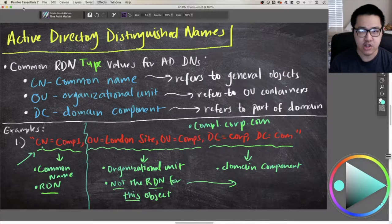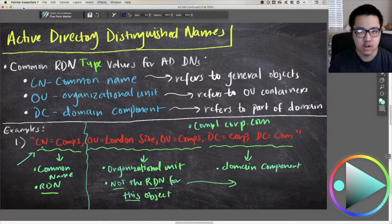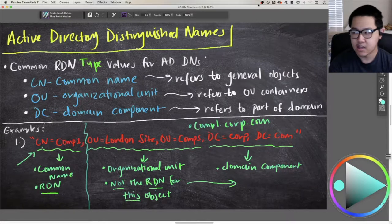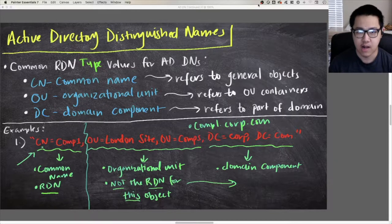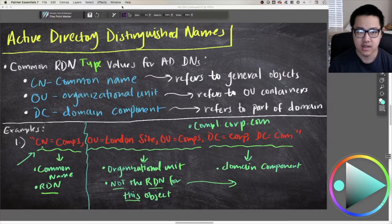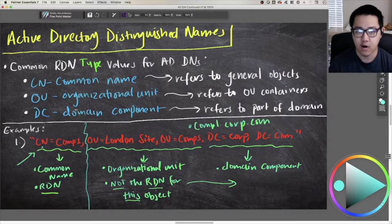The common name, CN, is going to refer to general objects. So if you are referring to a user object, a computer object, a group object, or a built-in container, this is going to be denoted with the CN type value.